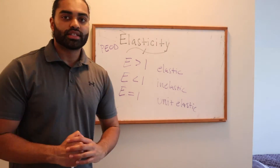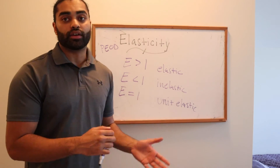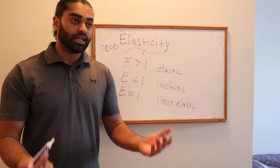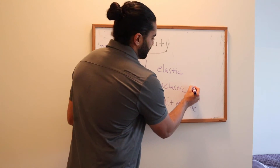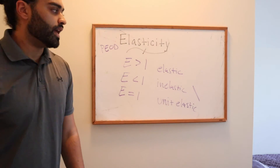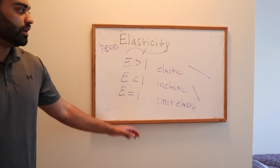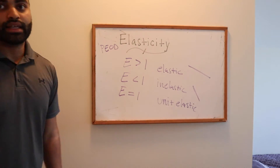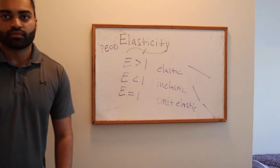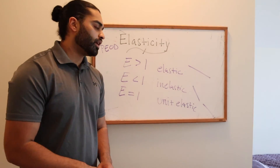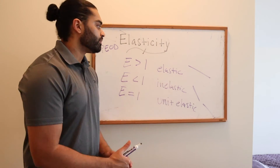Elasticity can also show us the slope or curvature of our demand curve. The steeper the curve, the more inelastic it is. The flatter the curve, the more elastic it is. Unit elastic will reflect the same proportional change. You'll see some problems throughout and we'll do a review on how these all show up.